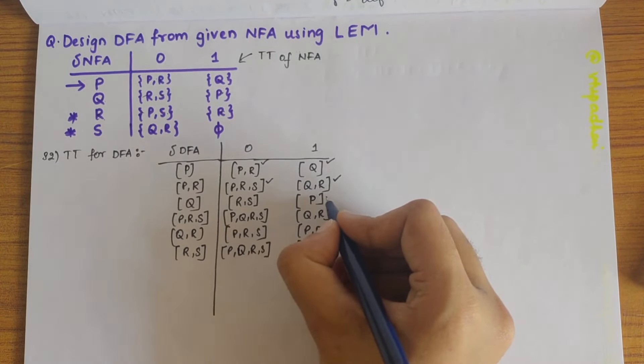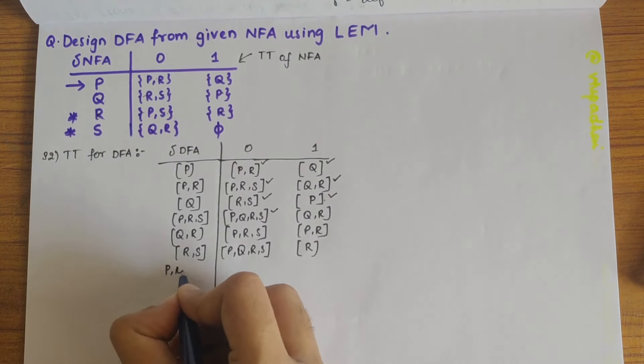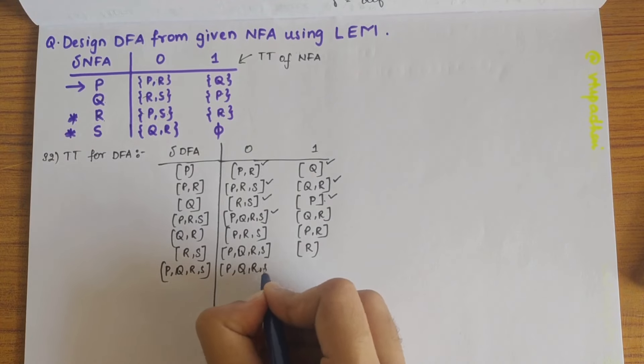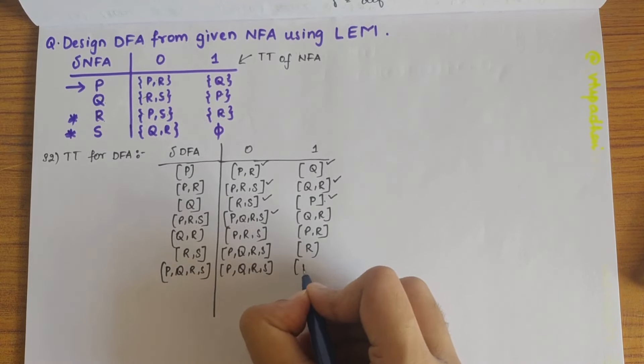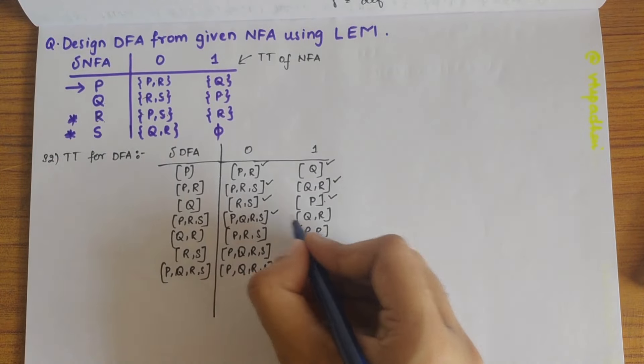Next we have, so we have defined RS also. P is there, P was earlier defined. Then we have PQRS here. So expanding PQRS on 0, we get PQRS itself. And PQRS on 1, we get PQR because there's phi here. So PQRS is defined.